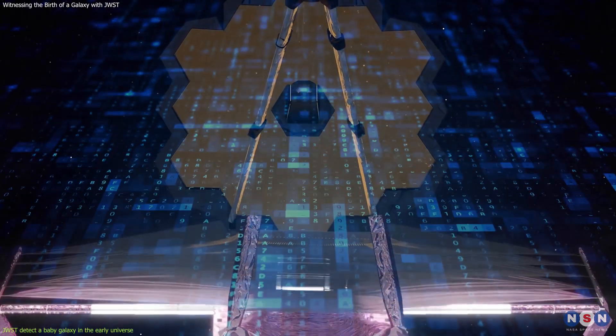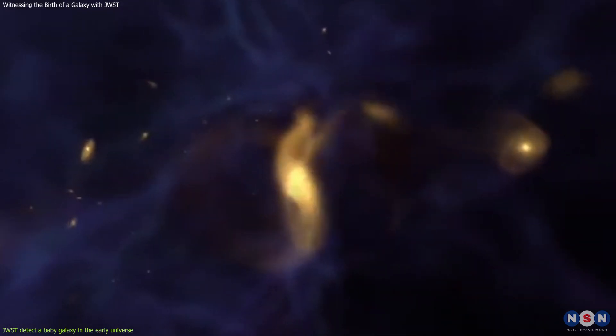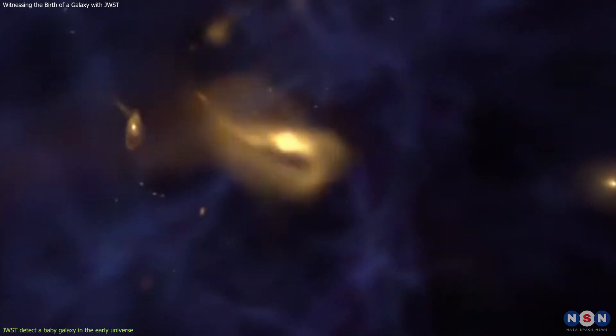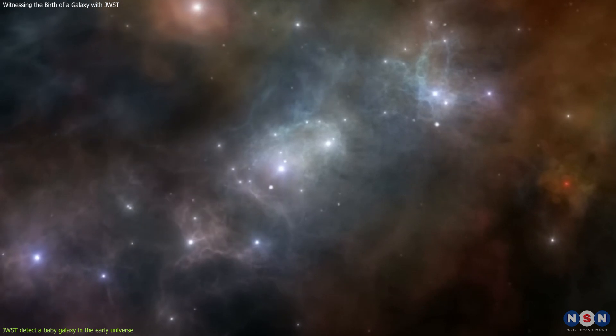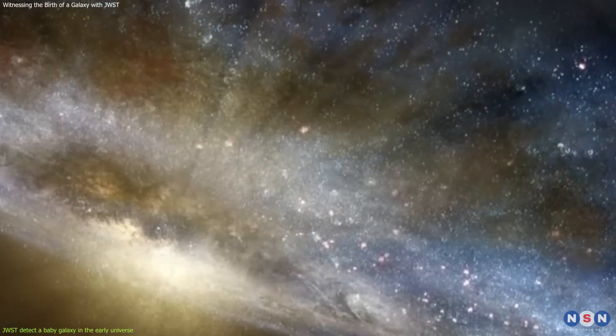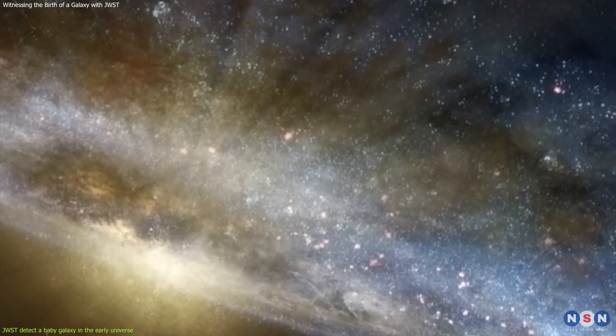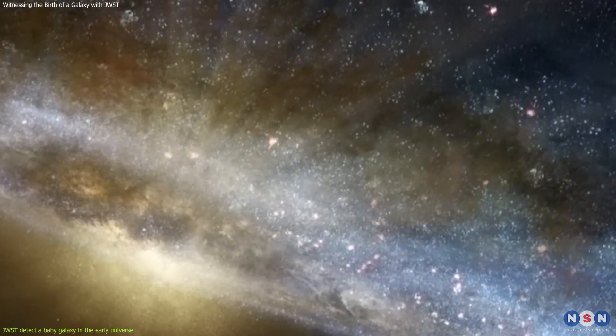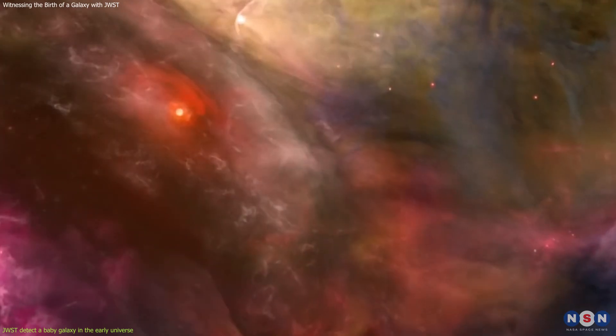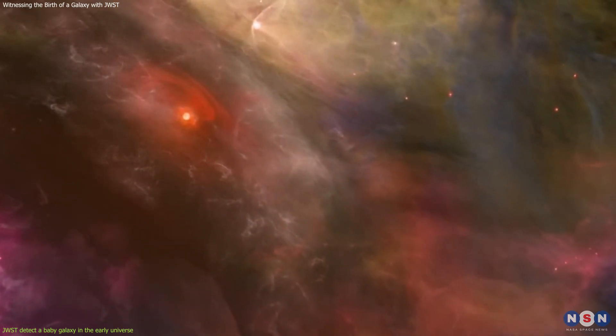The astronomers used James Webb's data to analyze this baby galaxy and its features. They found that it was actually the result of a merger of two smaller galaxies that collided and fused together. This merger triggered a burst of star formation, creating millions of hot young stars that shine brightly in ultraviolet light. Webb also detected glowing hydrogen gas around the baby galaxy, which is a sign of intense star formation and feedback.